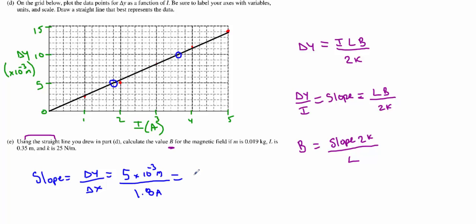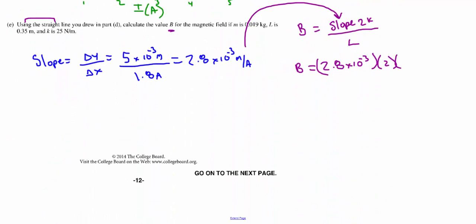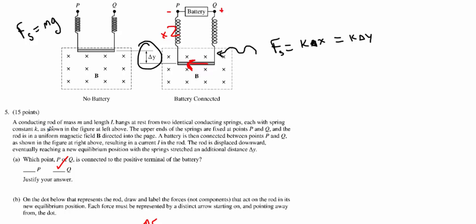Alright, I'm calculating a slope of right around 2.8, I had to round a little bit, times 10 to the negative 3, and that's going to be meters per amp. Now what I'm going to do is I'm going to use this in here to determine my magnetic field. So it's going to be 2.8 times 10 to the negative 3 times 2 times k. Which I do not recall at the top of my head. So I've got to look that one up on the front page. I'm losing my mind. I'm not looking at the front of the page. This is the spring constant k, not Boltzmann's constant.